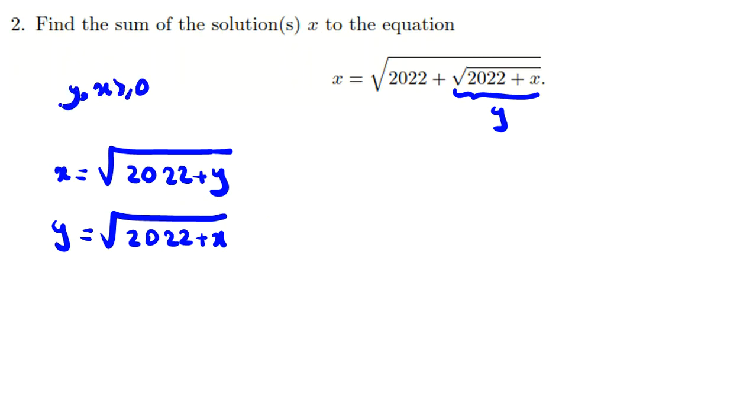x and y are greater than or equal to zero because they are roots of something. If you raise both sides to the power of two, x squared equals 2022 plus y, and y squared equals 2022 plus x.